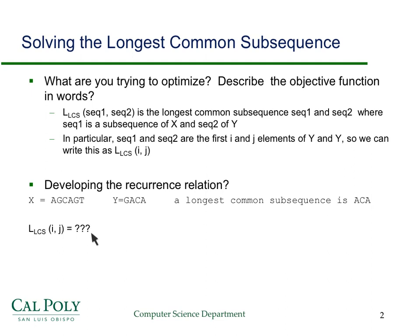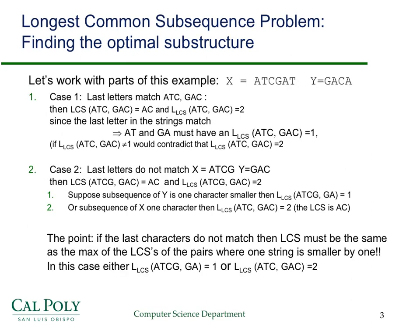The question is: how can you get from solutions to smaller subproblems to the solution to the bigger problem? Give that some thought and pause the video before going on. If you haven't been doing dynamic programming problems for a while, this can be pretty challenging, so if you got stuck trying to develop the recurrence relation, don't feel bad about it.